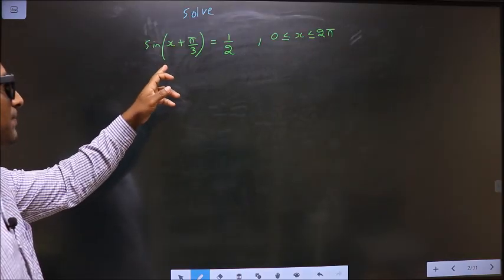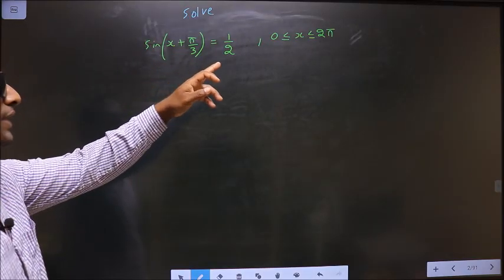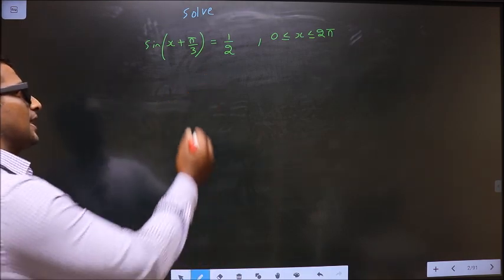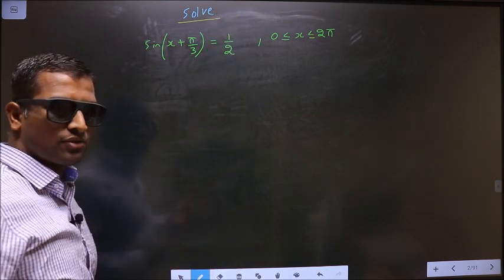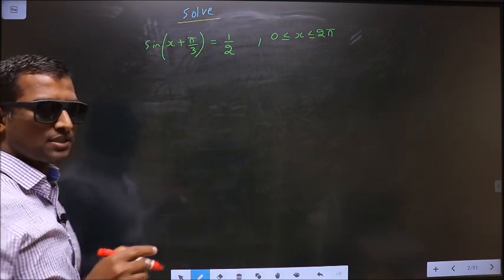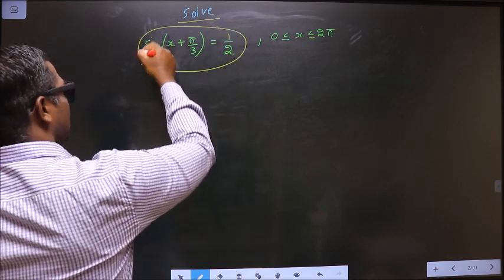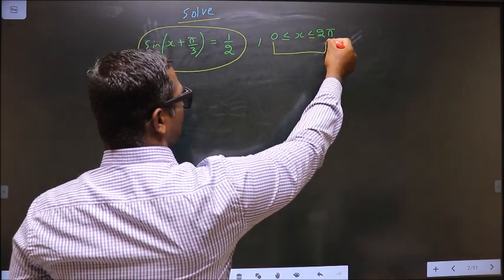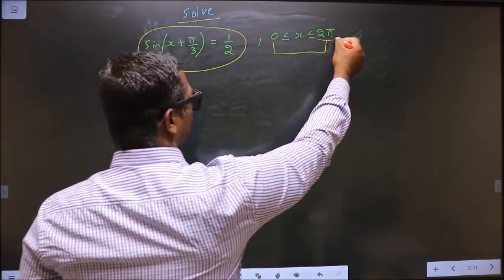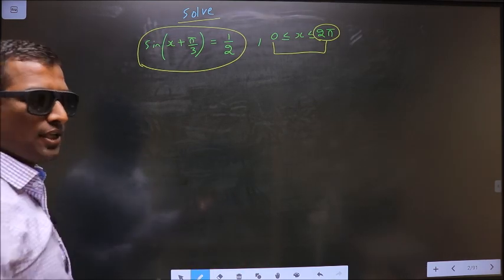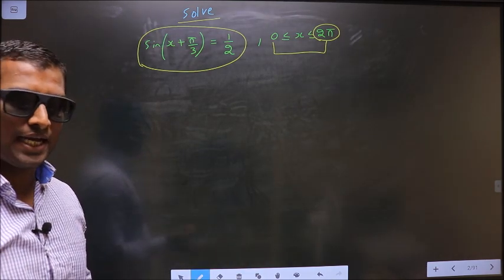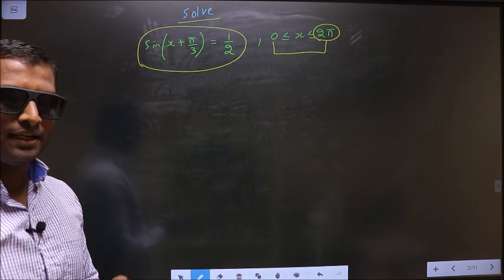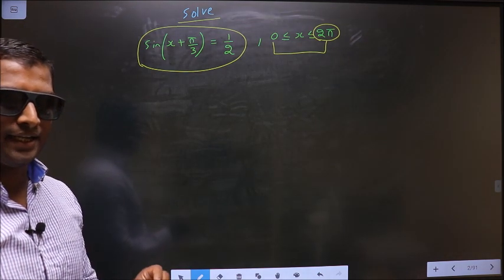Solve sin(x + π/3) = 1/2, where x lies in the interval 0 to 2π. You should find the values for x satisfying this equation that lie in the interval 0 to 2π. Since the interval is given in terms of 2π, you should get the answer in radians. For that, put your calculator in radians mode — I repeat, put your calculator in radians mode.